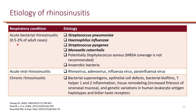For most patients, a small portion of cases — about 2% of adult cases — are bacterial rhinosinusitis, and these are due to respiratory pathogens. The top of the list is Streptococcus pneumoniae, followed by Haemophilus influenzae, Streptococcus pyogenes, and Moraxella catarrhalis.